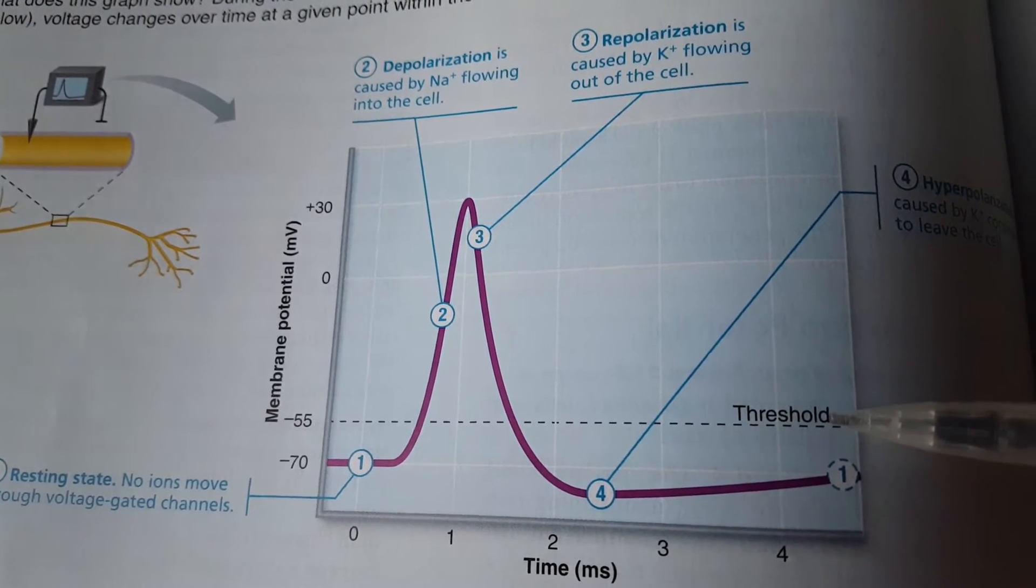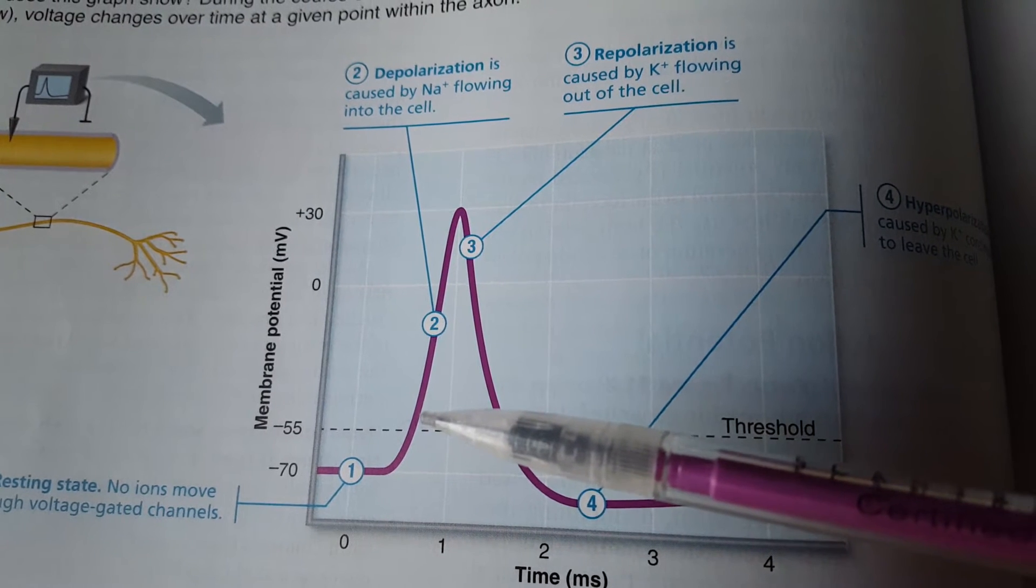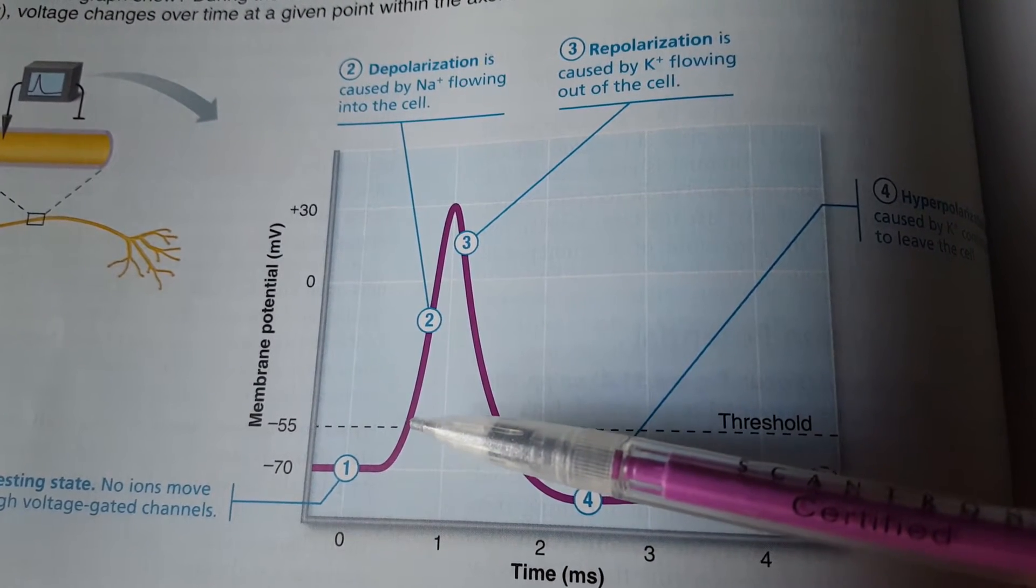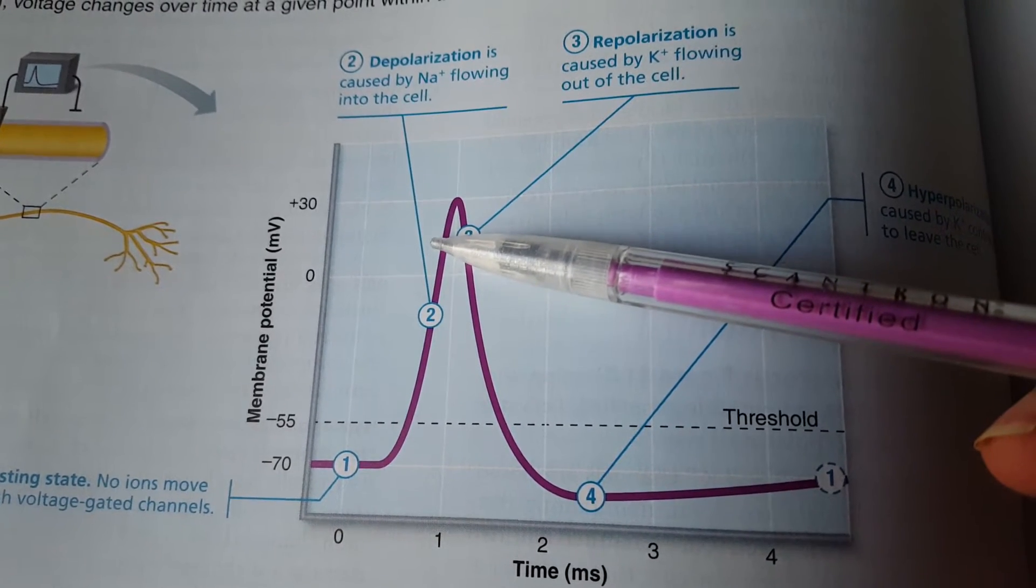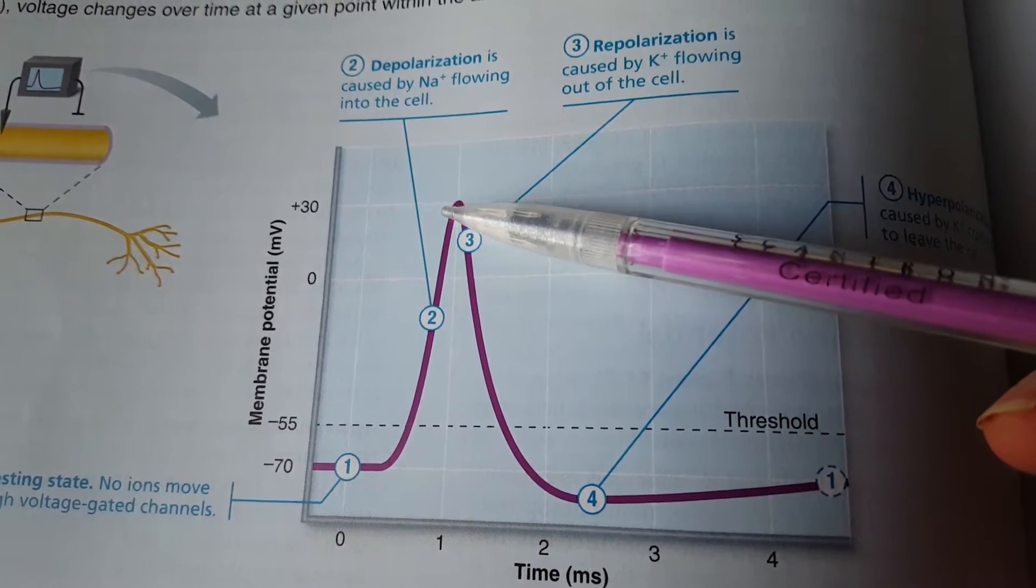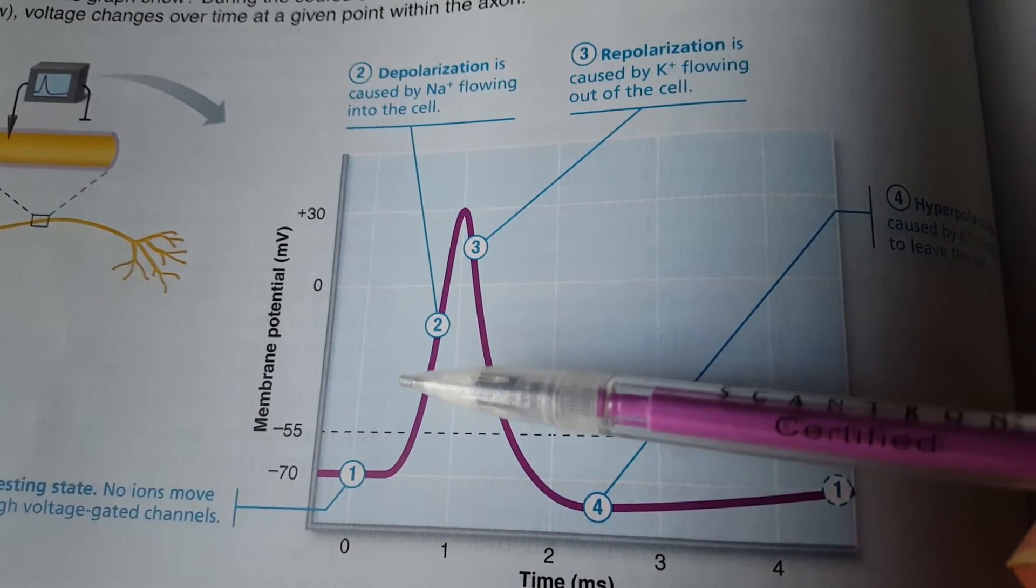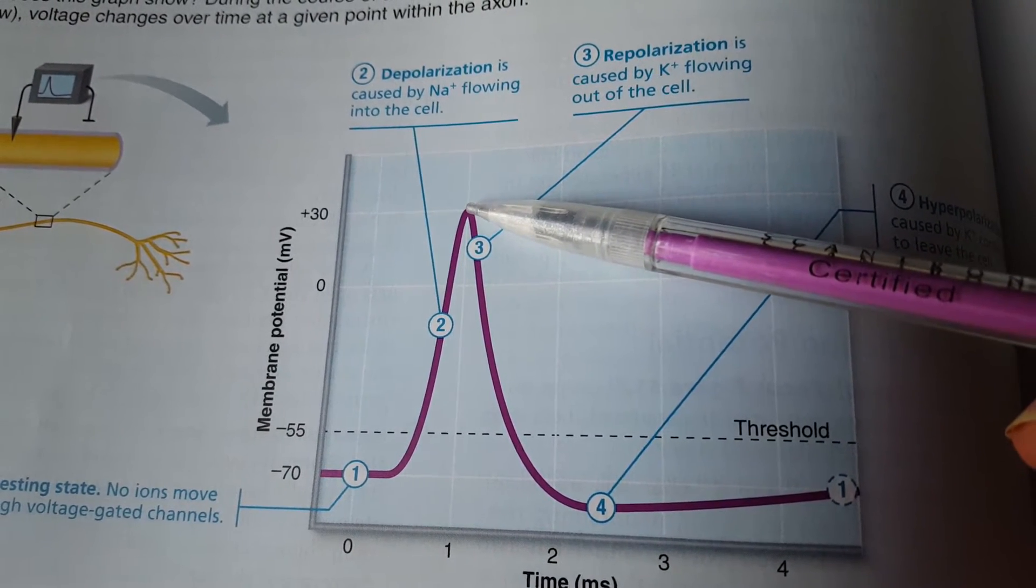As long as we have enough stimulus to hit threshold, what happens is sodium voltage-gated channels will open up at threshold. Sodium voltage-gated channels open up and then sodium comes into the cell, bringing its positive charges inside so that the inside of the cell becomes more positive all the way up to 30 mV, positive 30.